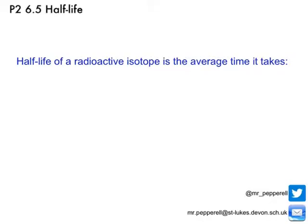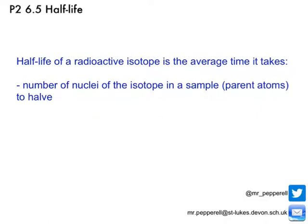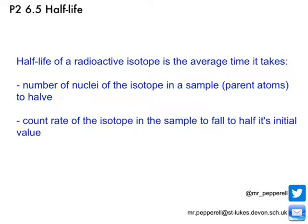We need to know the proper definition to quote in an exam. The half-life of a radioactive isotope is the average time it takes for the number of nuclei of the isotope in a sample — that's the number of parent atoms — to half. There's also a second definition: the half-life of a radioactive isotope is the average time it takes for the count rate of the isotope in the sample to fall to half its initial value. It's the same thing — the count rate is generated by the number of parent atoms, so if the number of parent atoms has halved, then obviously the count rate is going to half too.